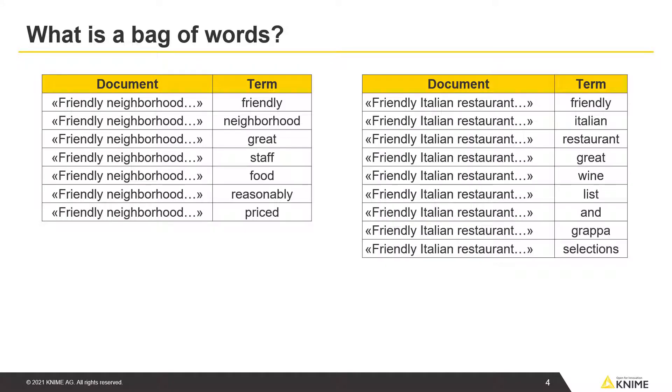Here you see the bag of words for the second document: Friendly, Italian, restaurant, great, wine, list, and grappa selections.